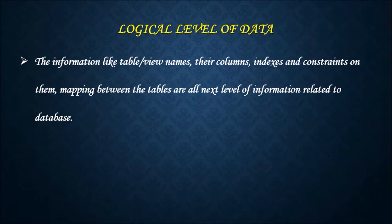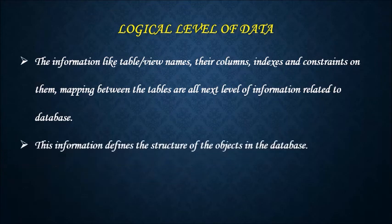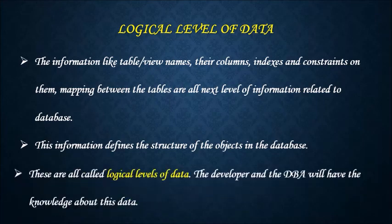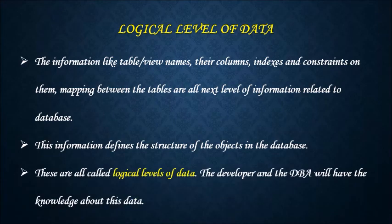This is called the physical level of data. The information like table or view names, their columns, syntaxes and constraints on them, mapping between the tables are all the next level of information related to database. This information defines the structure of the objects in the database. These are called logical levels of data. The developer and the database administrator will have knowledge about this data.